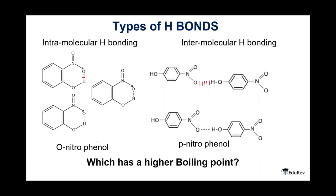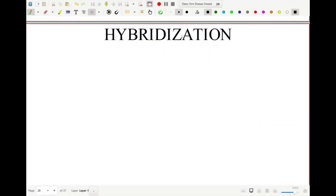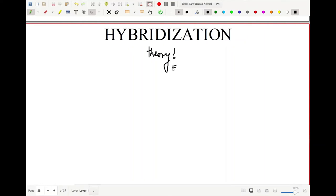Which has a higher boiling point — intramolecular or intermolecular hydrogen bonding? In intramolecular hydrogen bonding, there is no force binding different molecules together, so the molecules are discrete. In intermolecular hydrogen bonding, the hydrogen bond binds different molecules together, which is why intermolecular hydrogen-bonded compounds have a higher boiling point. Now, the first and foremost thing about hybridization: it is just a theory — a mathematical trick to explain bonding. It does not actually happen in reality.